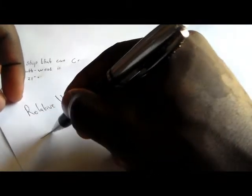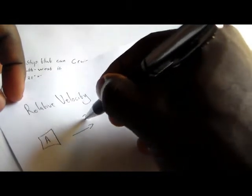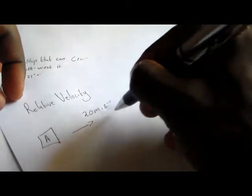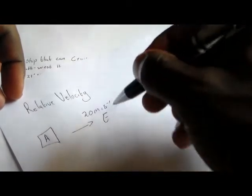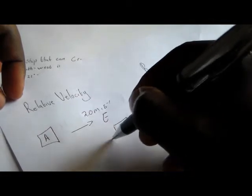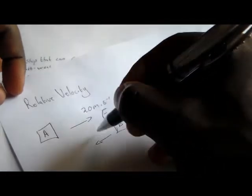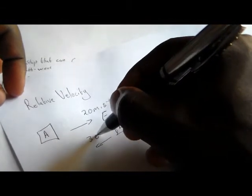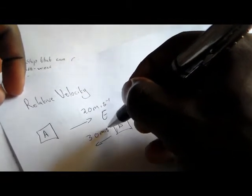For example, let's say you have body A, which is moving directly east at a speed of 20 meters per second. And then we have body B, moving at a velocity of 30 meters per second directly west.